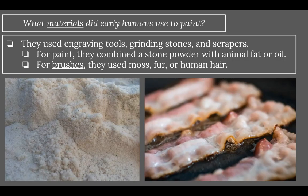What materials did early humans use to paint? They used engraving tools, grinding stones, and scrapers to work on the walls and the paint. For paint, they combined stone powder with animal fat or oil to get different colors — that's why there's a picture of bacon, which releases a lot of animal fat. For brushes, they used moss, fur, or human hair.